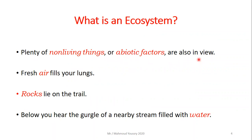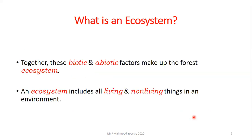There are also plenty of non-living things, called abiotic factors, also in view. The fresh air that fills your lungs, the rocks that lie on your trail, and the gurgle of a nearby stream filled with water — all these are abiotic or non-living factors. Together, the biotic factors like plants and animals, and the abiotic factors like water and rocks, make up the forest ecosystem.